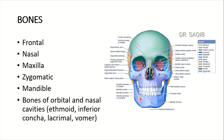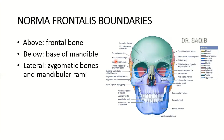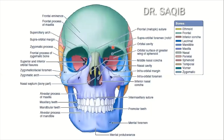And then the bones of the orbital cavity will be discussed separately in a separate lecture, and the bones of the nasal cavity similarly in a separate lecture. We'll just see what is visible over here. You can see in the orbital cavity over here.